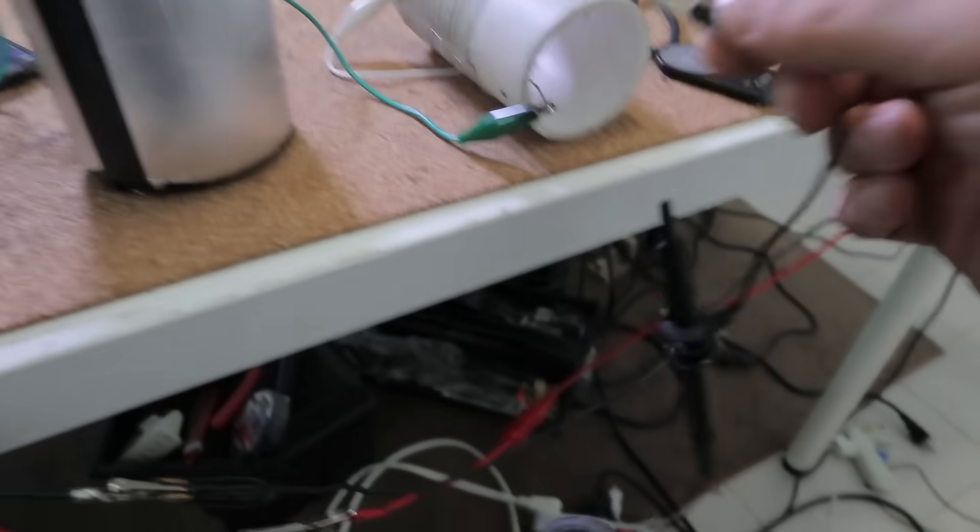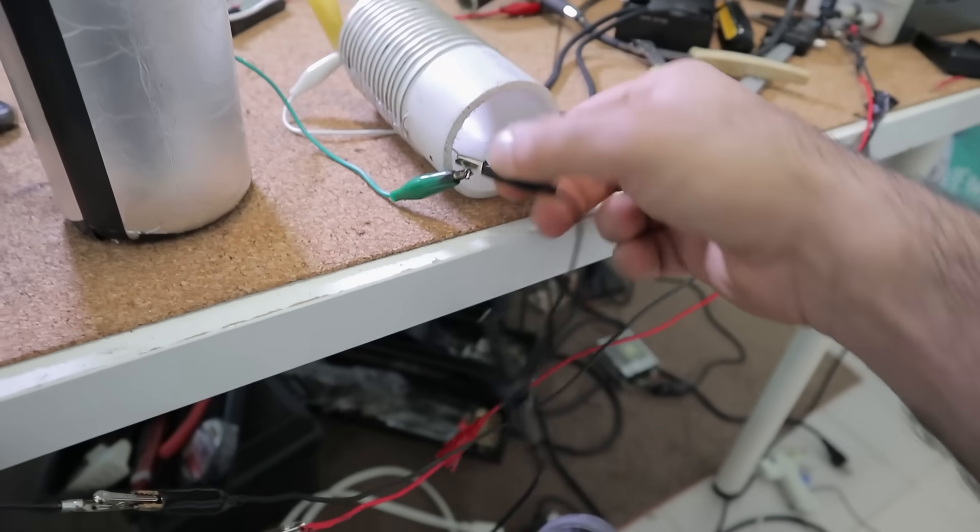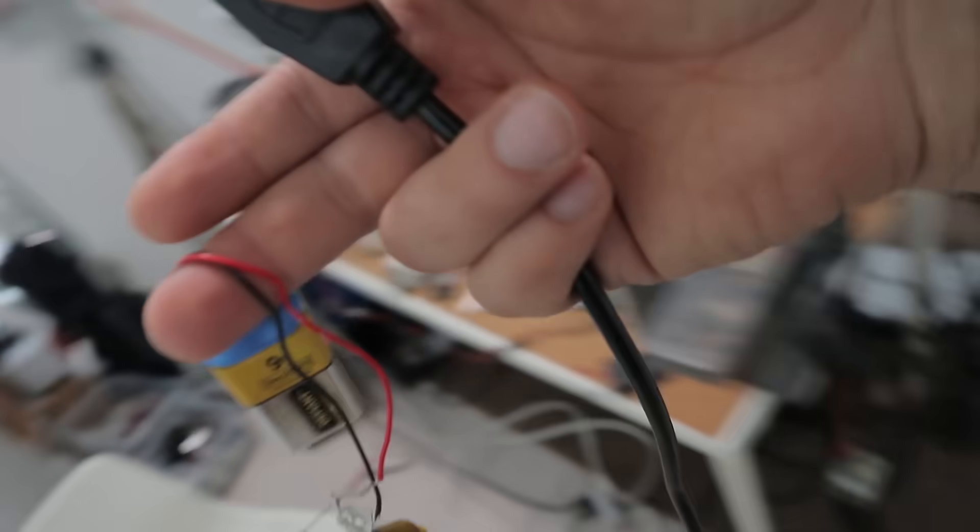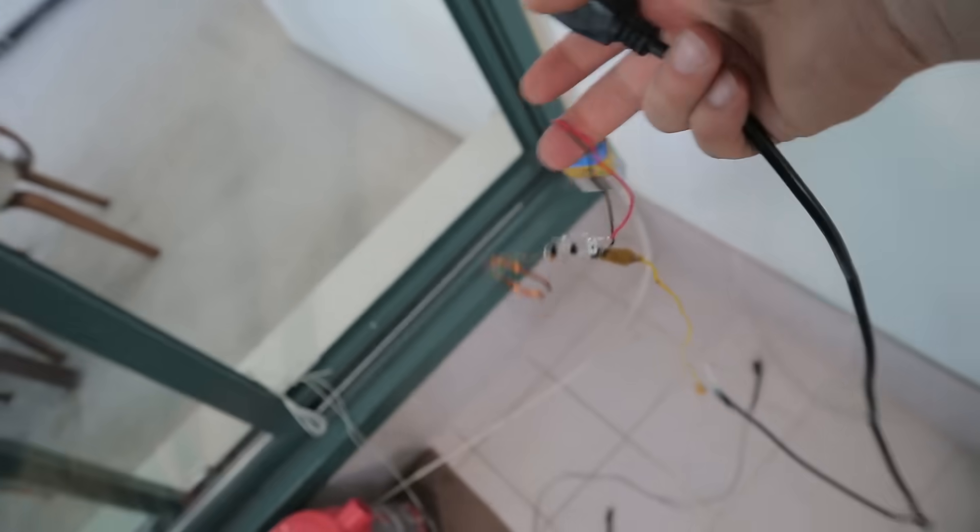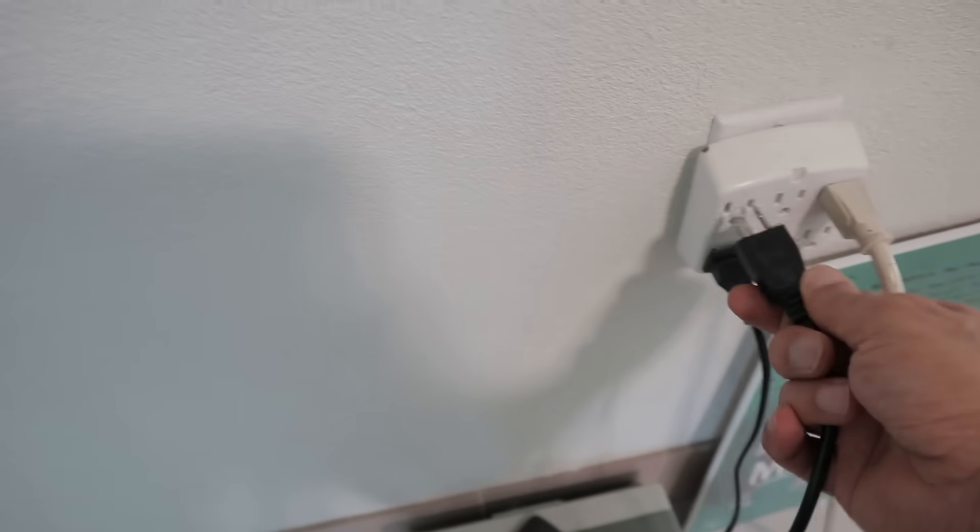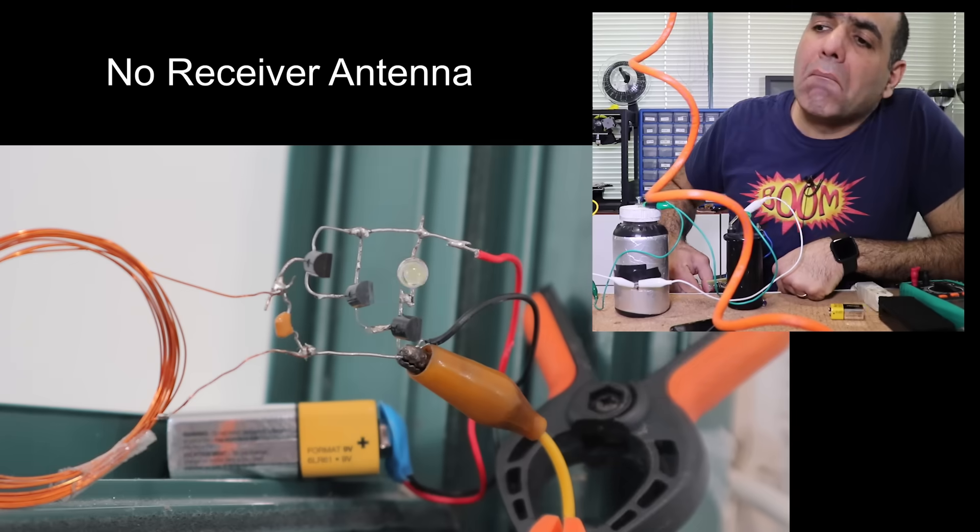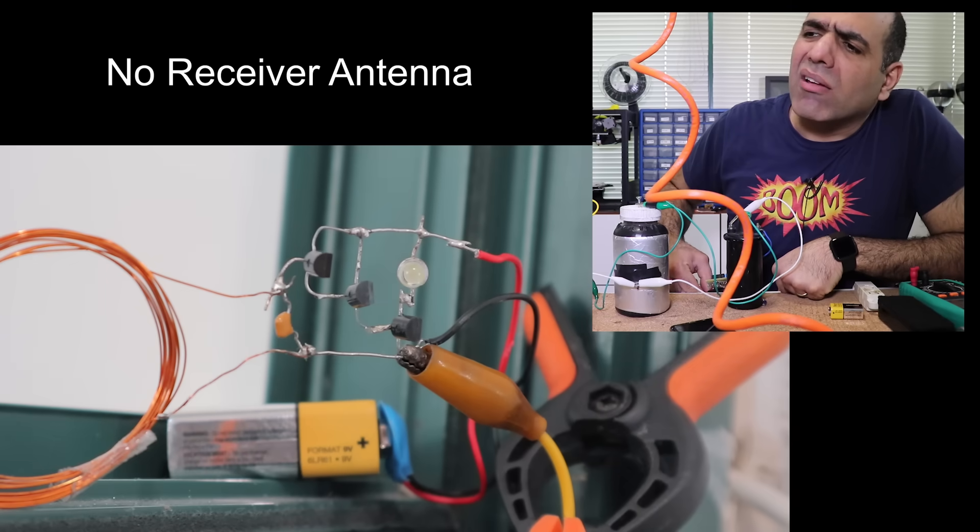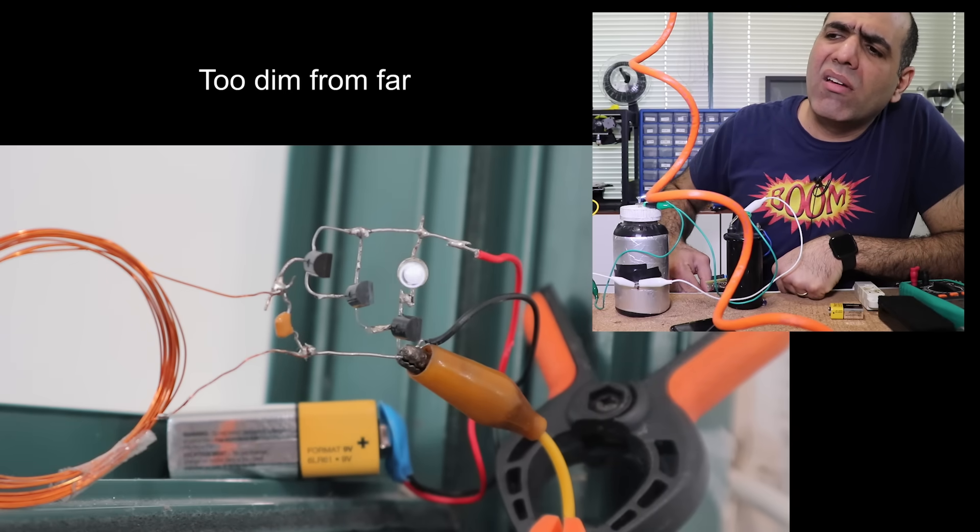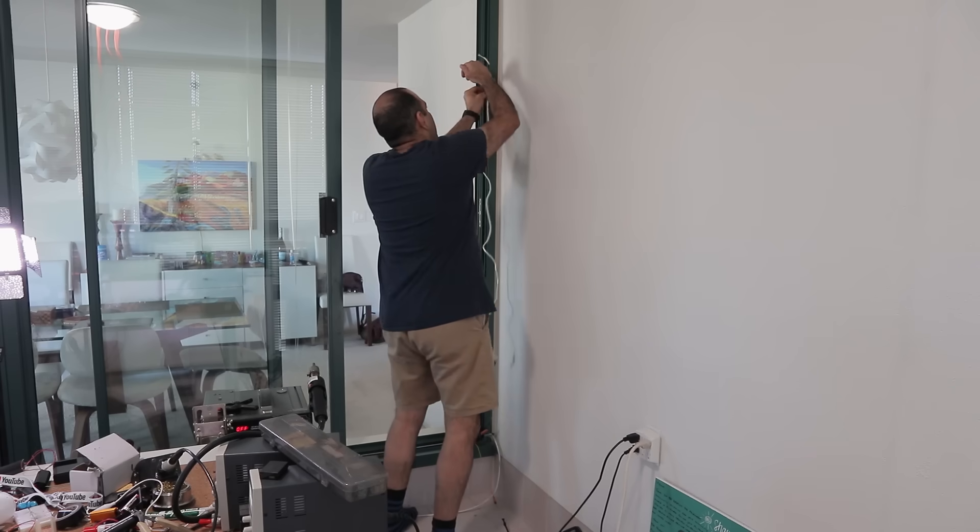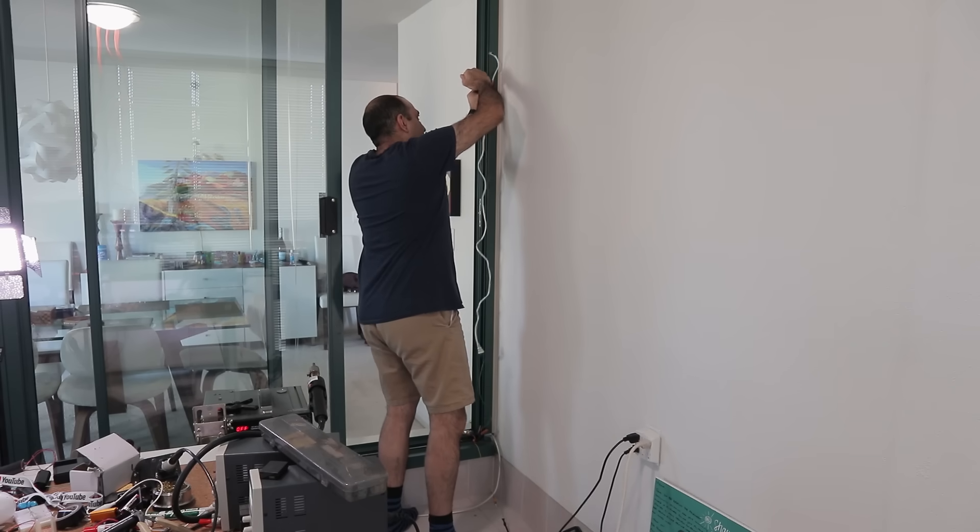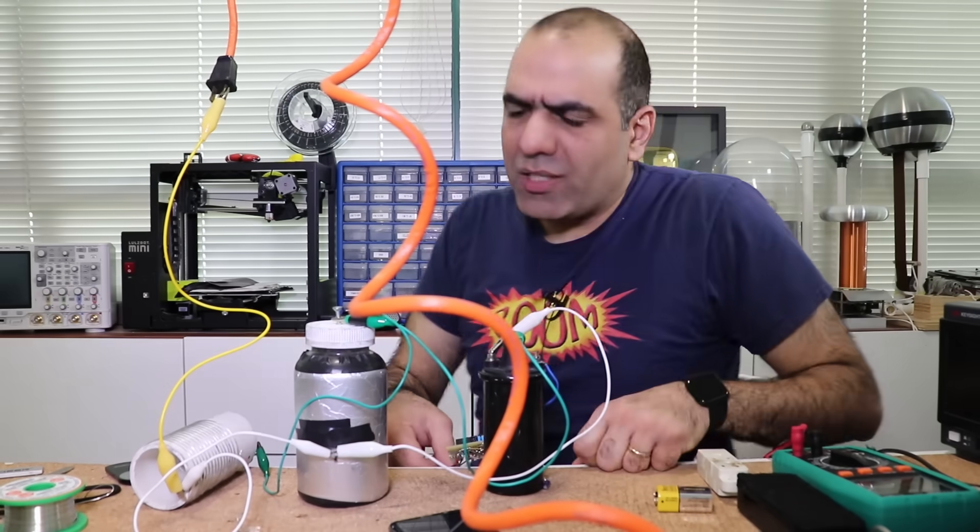And I connect the other side to earth through my scope ground. Well, let's just move it all the way back in this corner. And I'll use the outlet earth to connect it to ground. There you go. No antenna connected, don't see anything. Now I'll just hook my receiver antenna to this corner here. And here it is with the antenna.